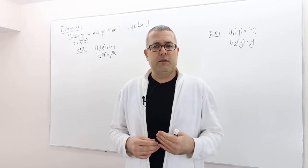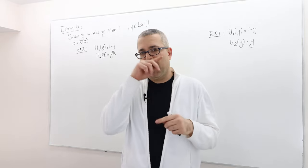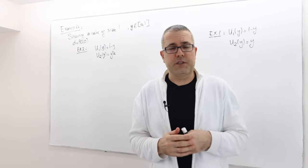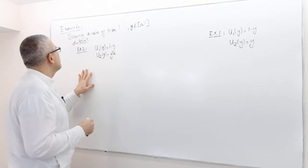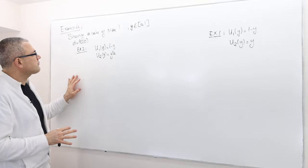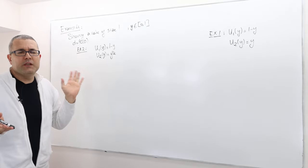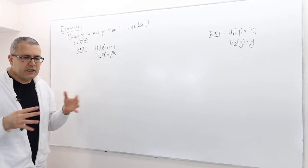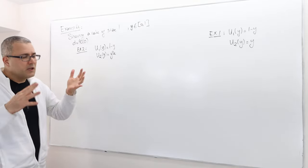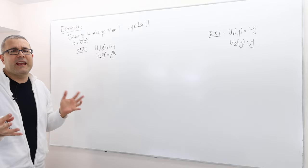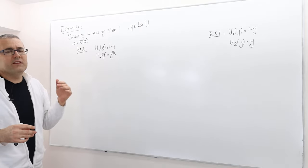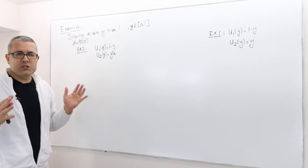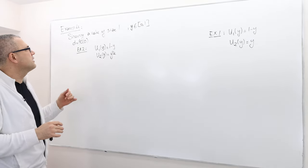Let's work on some examples and show how we can find the Nash bargaining solutions. Here's a very simple example: two individuals, two negotiators are trying to share a fixed surplus. Consider it as a cake of size one — the surplus is size one. So this is just a normalization.